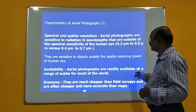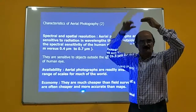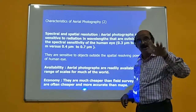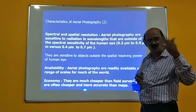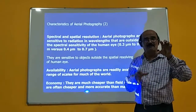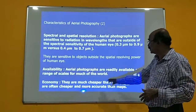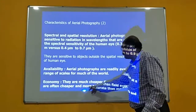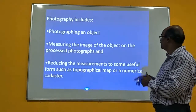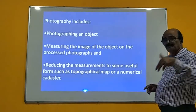Aerial photographs are readily available at a range of scales. Photography scale is derived as focal length divided by flying height. Smaller scale covers larger area but provides less detail; larger scale covers smaller area and provides more information. For example, 1:25,000 provides more information than 1:50,000. Economically, aerial photographs are cheaper than field surveys and often cheaper and more accurate than maps. Photography involves photographing an object, making measurements using its image, and reducing the measurements to a useful form such as a topographical map or a numerical cadastre.